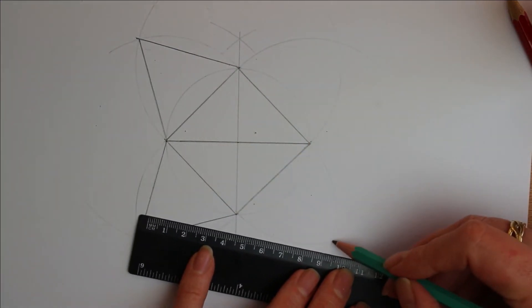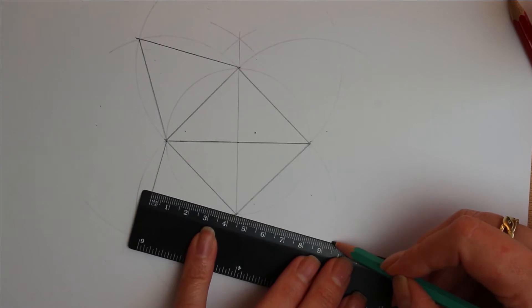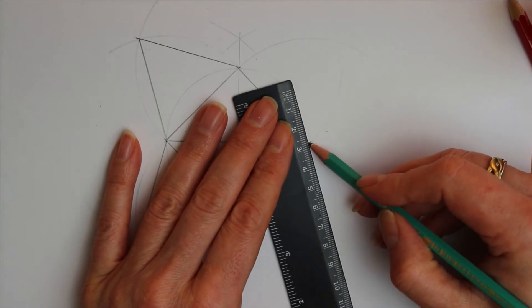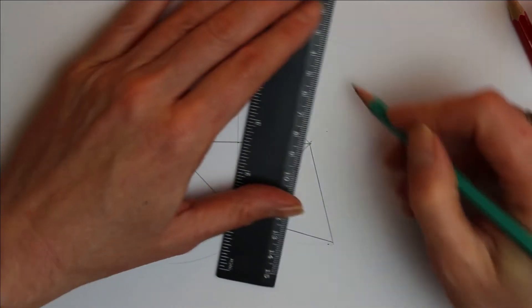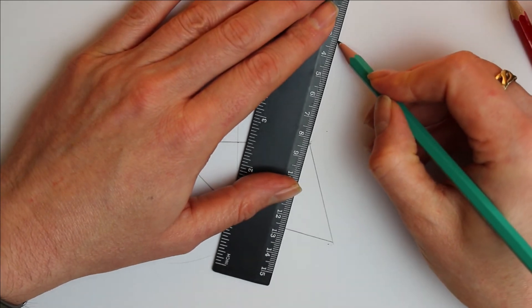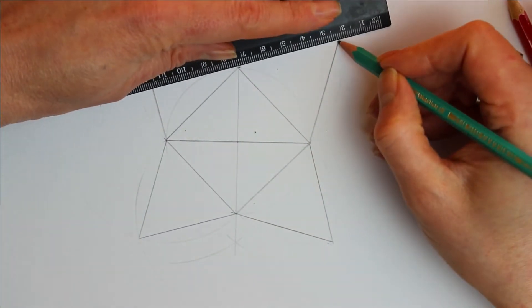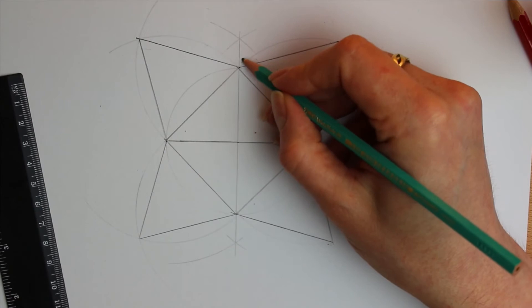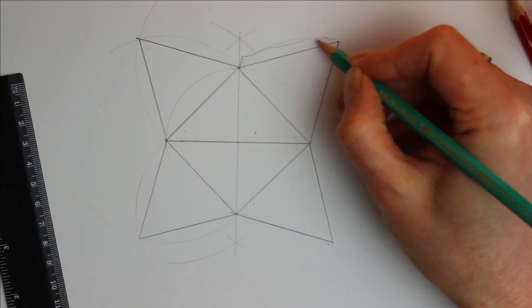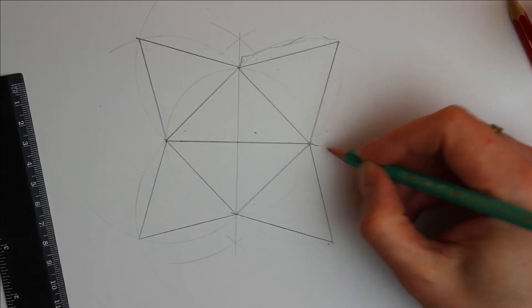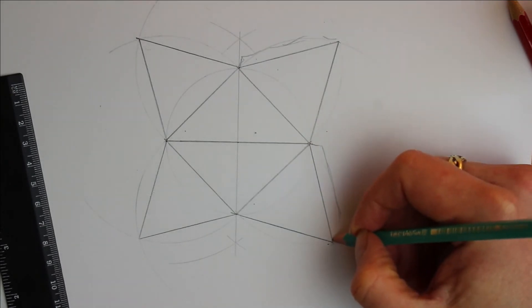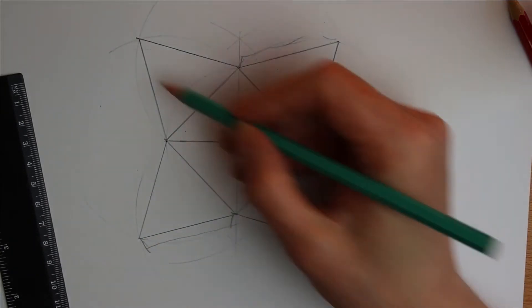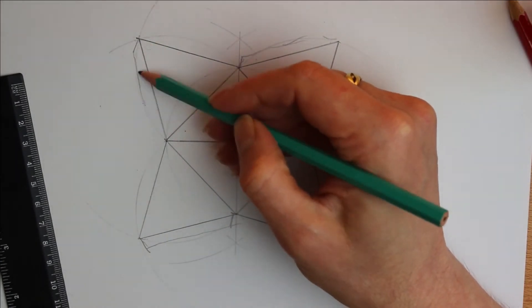Now before we cut this out, I think it would be important to put tabs along the edges. It just helps us when we're gluing this together. So I'd do a tab here, tab there, and there, and the final tab there.